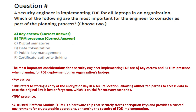Next question: a security engineer is implementing FDE — full disk encryption — for all laptops in an organization. Which of the following are the most important for the engineer to consider as part of the planning process? Choose two. Option A: key escrow. Option B: TPM presence. Option C: digital signatures. Option D: data tokenization. Option E: public key management. Option F: certificate authority linking.